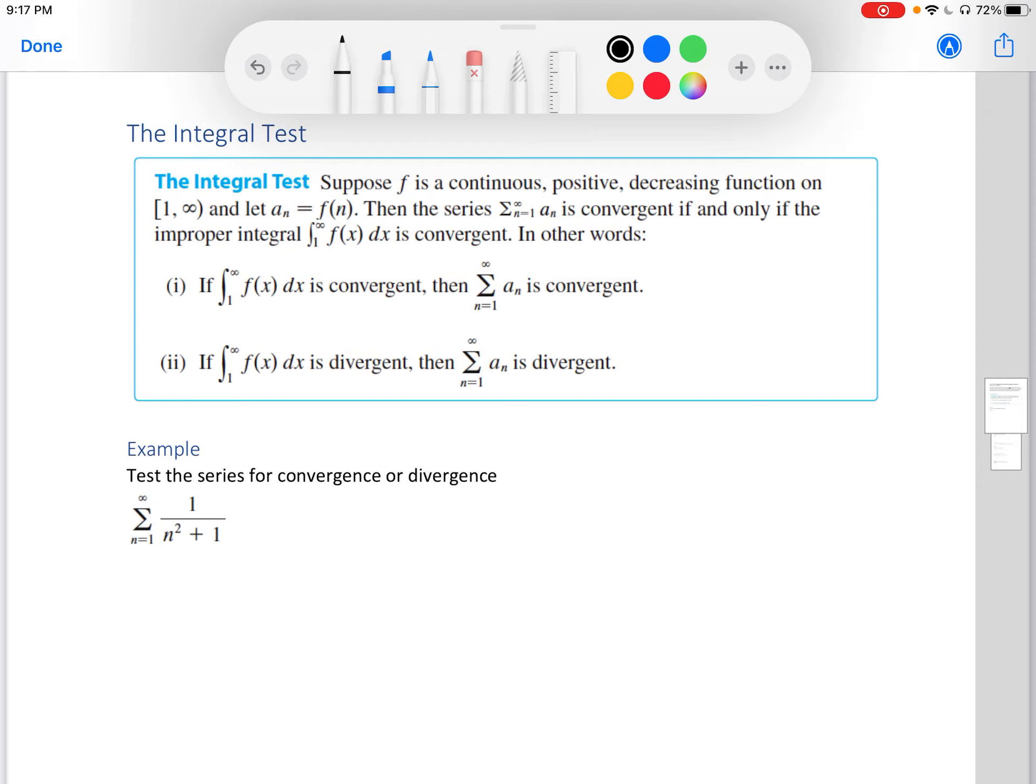The Integral Test: Suppose f is a continuous, positive, and decreasing function on the interval from 1 to infinity. Let a_n equal f(n). Then the series sigma from n equals 1 to infinity of a_n is convergent if and only if the improper integral from 1 to infinity of f(x)dx is convergent. In other words: